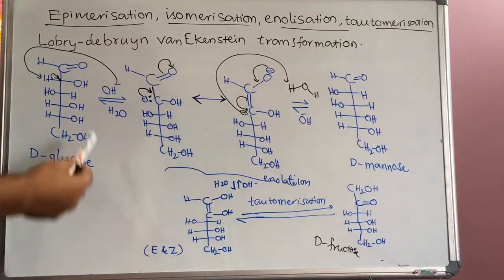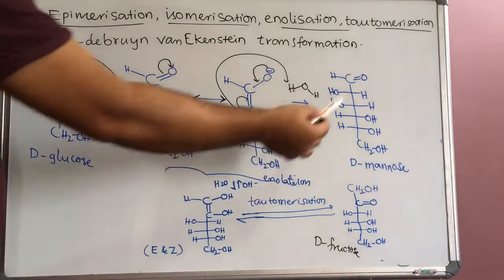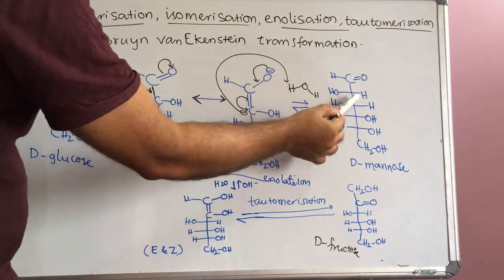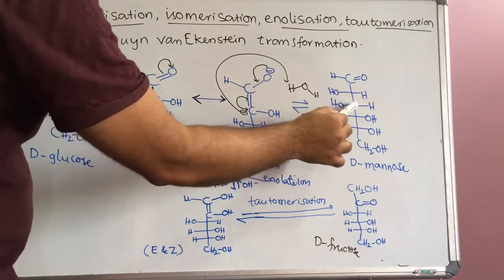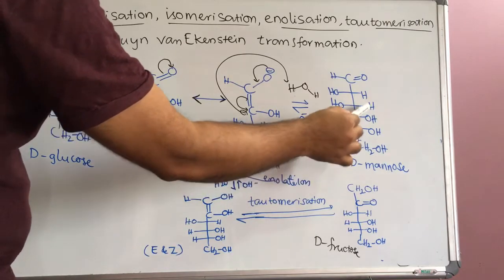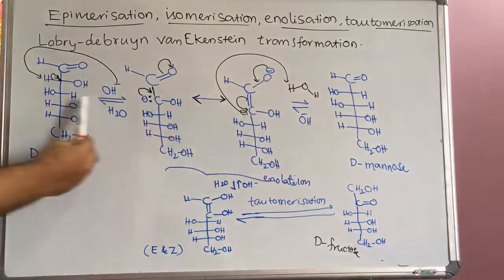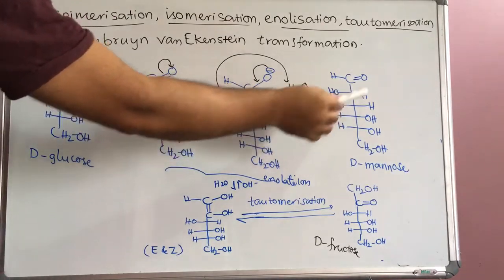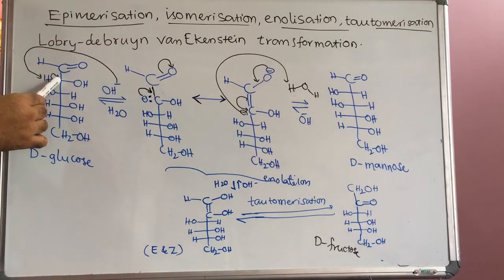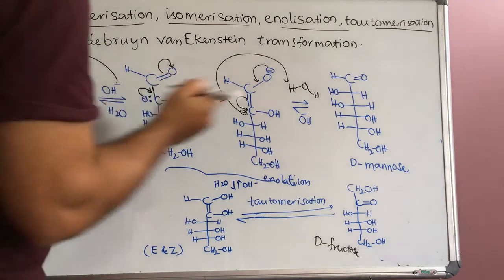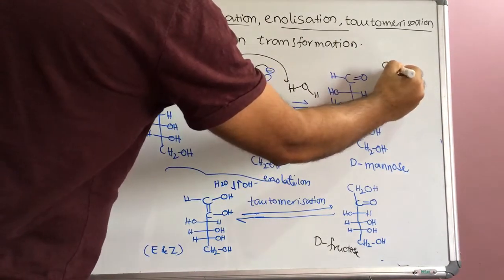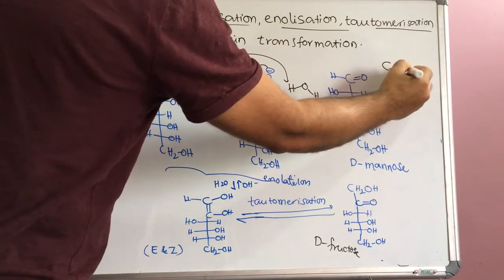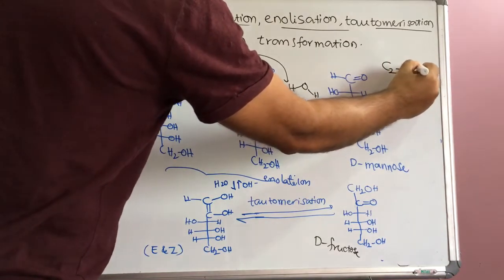Now observe D-glucose and D-mannose — in these two, positions 1, 2, 3, 4, 5, 6: configurations at C3, C4, C5, C6 remain the same. Only the configuration changes at the second position. That is why this is called C2-epimers. At the second carbon position, if the configuration differs, then it is called C2-epimers.